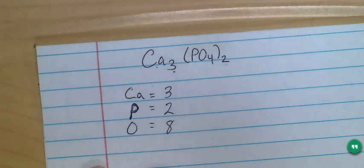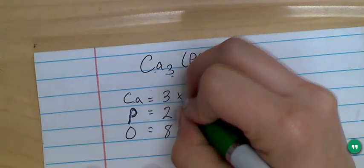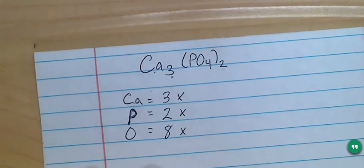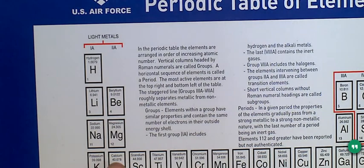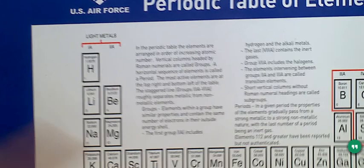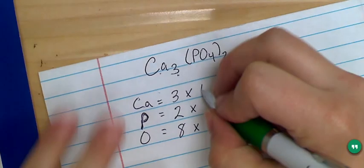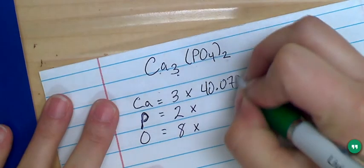Then I'm going to take the number of atoms of each element and multiply it by its atomic mass from the periodic table. So if I go to my periodic table, I can see that calcium here is 40.078. So I'm going to write 40.078 next to the calcium.